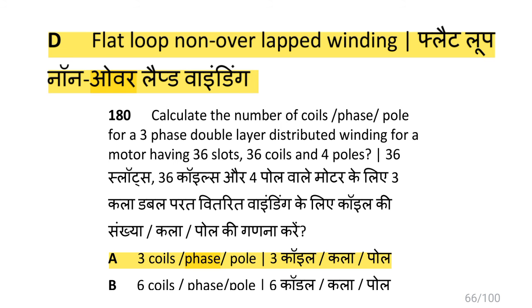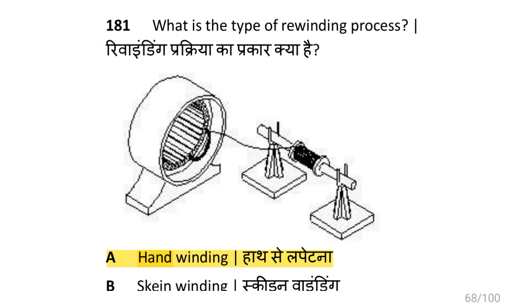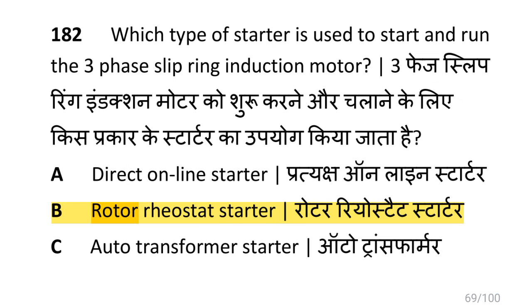Calculate the number of coils per phase per pole for a three phase double layer distributed winding for a motor having 36 slots, 36 coils, and 4 poles: the answer is three coils per phase per pole. The type of rewinding process illustrated is hand winding. The starter used to start and run a three phase slip ring induction motor is the rotor rheostat starter.